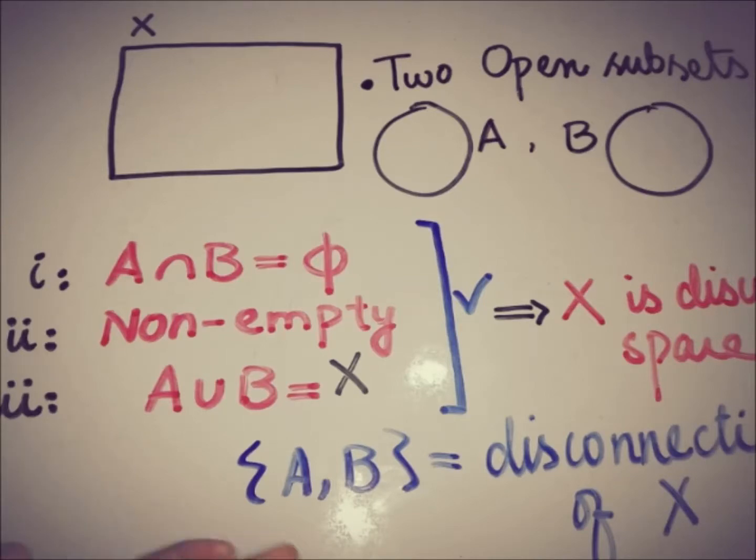And if the space has no such pair of two open sets that are disjoint, that are non-empty, whose union is equal to X, then we say that the space X is a connected space.